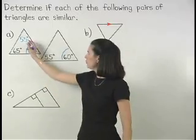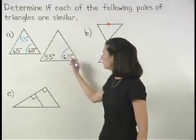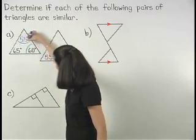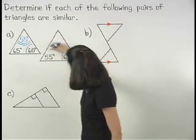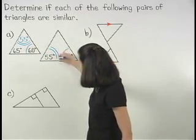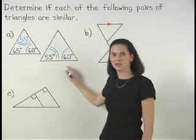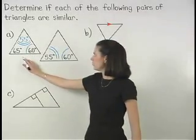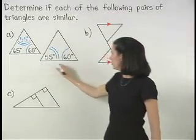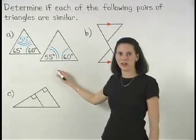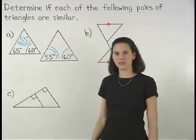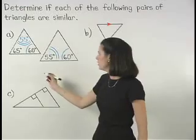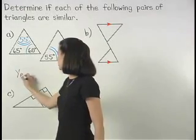Now we have two pairs of congruent angles: the 55 degree angles and the 60 degree angles. Therefore, since two of the angles of one triangle are congruent to two of the angles of the other triangle, we can say that yes, the triangles are similar by the angle angle similarity postulate.